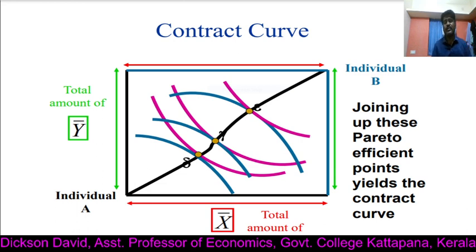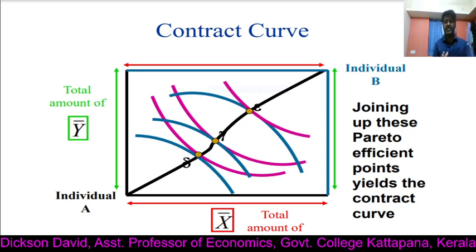So, there are three different points. From the left-hand bottom towards the right-hand top, you can see there are three different points of intersection of indifference curves of individual A and individual B. They are delta, gamma, and epsilon.